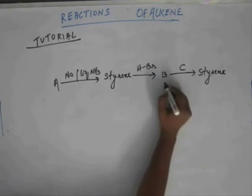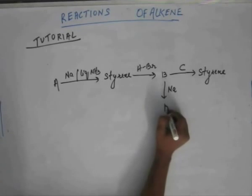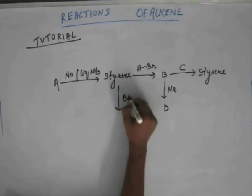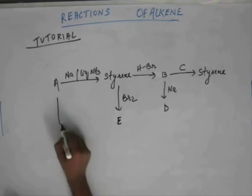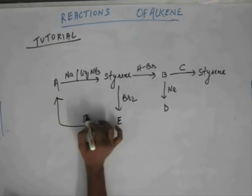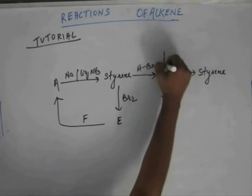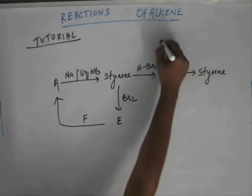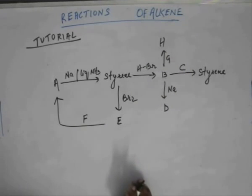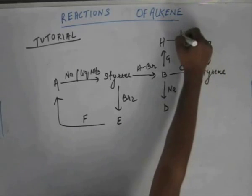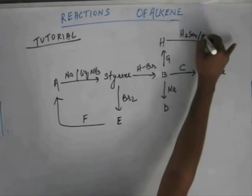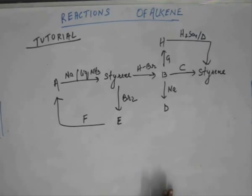Now on this B, if I add sodium, I get D. On styrene, if I add Br2, I get E. On E, if I add F, that gets me back to A. On B, if I add G, that gets me H. And from H, if I add H2SO4 with delta, that gives me styrene again. So you have to find all the unknowns given here.